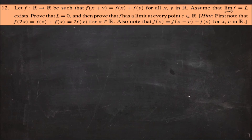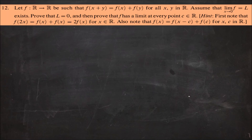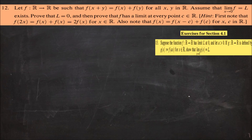In question 12, we are given that f is a function satisfying f(x + y) = f(x) + f(y) for all x, y ∈ ℝ. We assume that the limit as x tends to 0 of f equals L. We need to show that L = 0, and further that f has a limit at every point c ∈ ℝ. The hint suggests using f(x) = f(x − c) + f(c). We will use two results from Exercise 4.1.